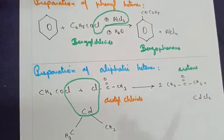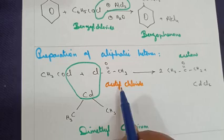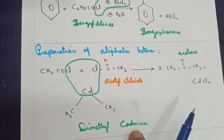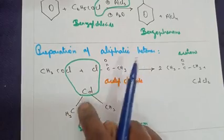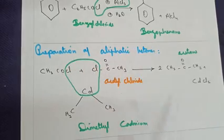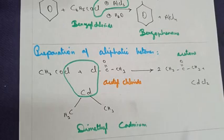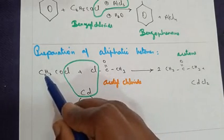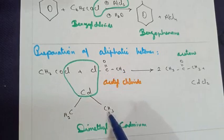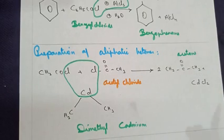The last method is the preparation of aliphatic ketone. The only method given in your textbook uses two molecules of acetyl chloride treated with dimethyl cadmium (CH3-Cd-CH3). Cadmium combines with the two chloride ions and leaves as cadmium chloride (CdCl2). We are left with CH3-CO-CH3, that is two molecules combined to give acetone (propanone). Thank you.